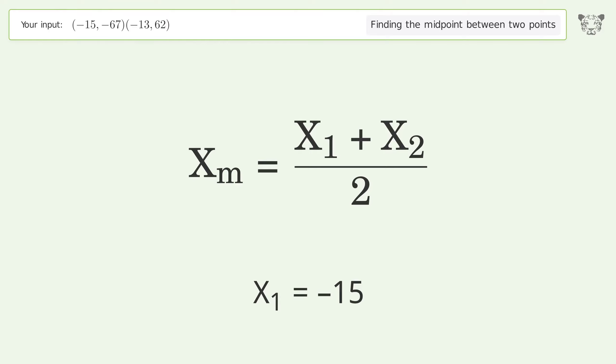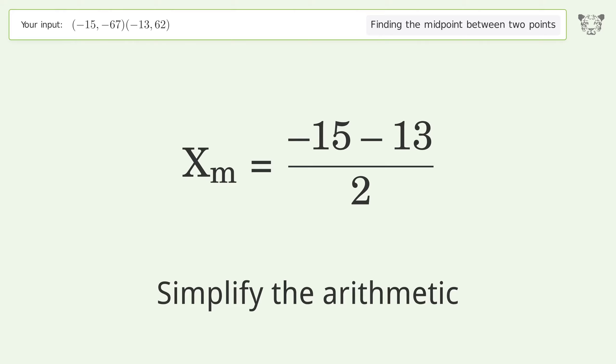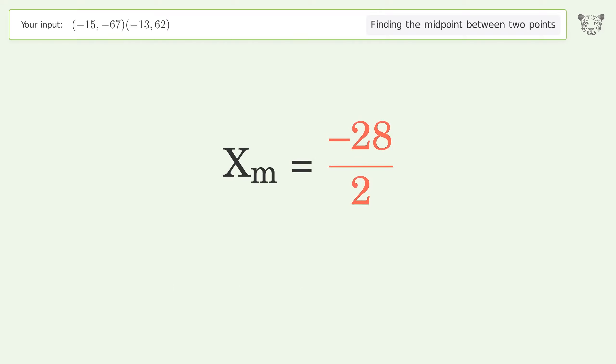Use the x values in the midpoint formula to find the midpoint's x-coordinate. x1 = -15, x2 = -13. Simplify the arithmetic.